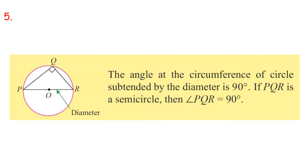Property 5: The angle at the circumference of a circle subtended by the diameter is 90 degrees. If PQR is a semicircle, then Angle PQR equals 90 degrees.